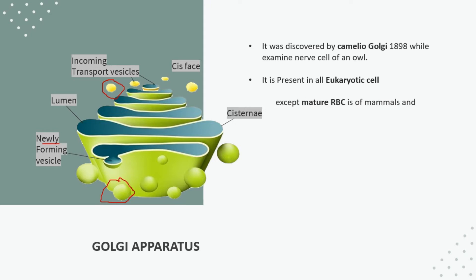But in mammals, in mature red blood cells, the Golgi apparatus is absent. In the same way, in all prokaryotic cells like bacteria and blue-green algae, the Golgi apparatus is absent.